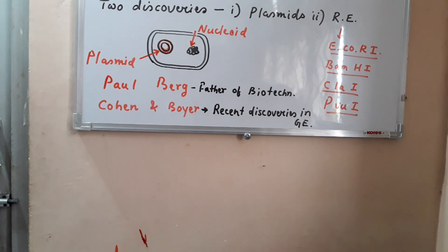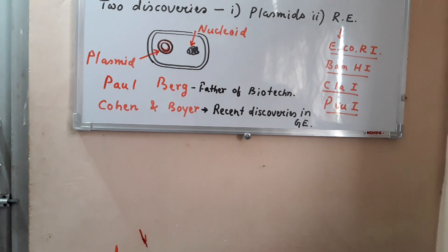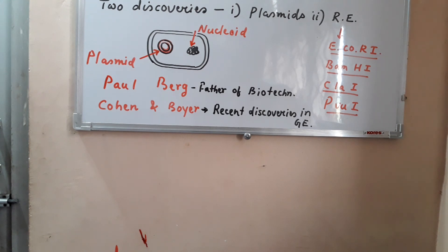Cloning vectors are used in genetic engineering experiments as vectors. They are usually plasmids that can be cloned by inserting DNA from other organisms. For example, the insulin gene obtained from the beta cells of the human pancreas can be inserted into the plasmid of E. coli bacteria, and the insulin can then be produced in E. coli — it is human insulin produced by bacteria.